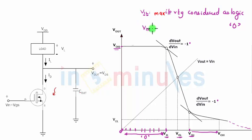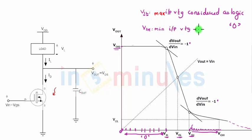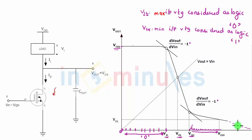Let's similarly define VIH. Here is a point where your input is considered as logic 1 for the first time. And after this, from here to here, it will all be considered as a logic 1. So this is called the minimum input voltage interpreted as logic 1, because after this your input can still be considered high.